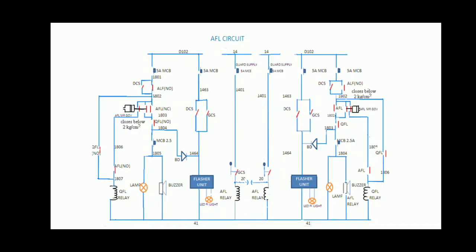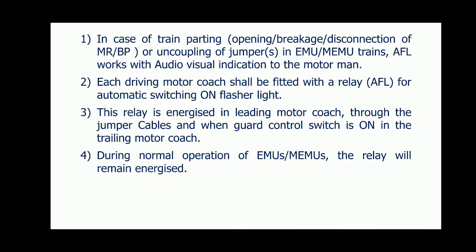Today's topic is AFL circuit in EMU and MEMU. In case of train parting, i.e., opening or breakage or disconnection of MR pipe or BP pipe, or uncoupling of jumper or jumpers in EMU and MEMU trains, AFL works with audio-visual indication to the motor man or LP.